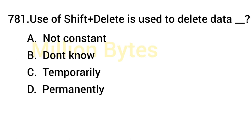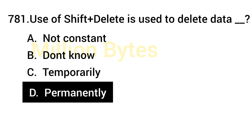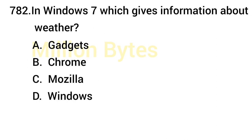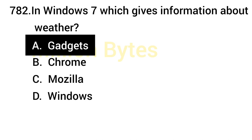Shift + Delete is used to delete data permanently. If you use Shift + Delete, it will delete the data permanently. In Windows 7, Gadgets give information about weather.